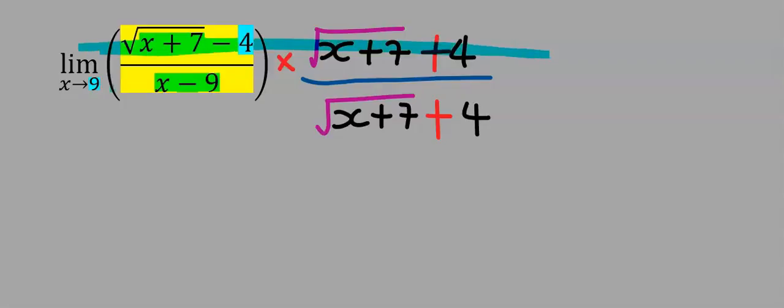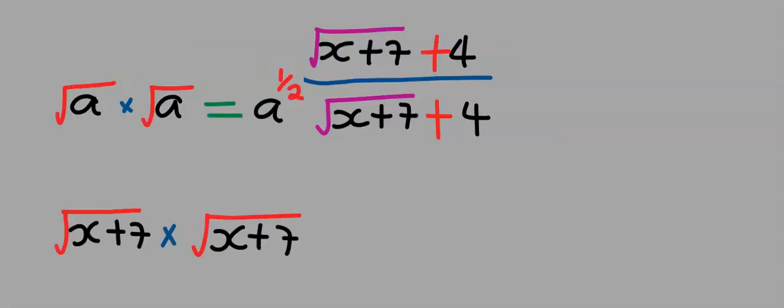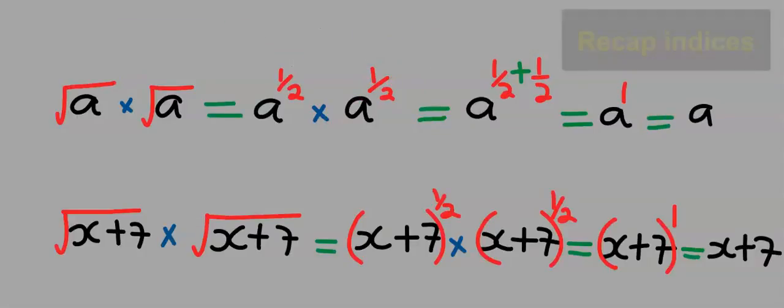Remember, everything at the top will be multiplying and everything at the denominator will also be multiplying. Before we go to the next step, let's recap from laws of indices.